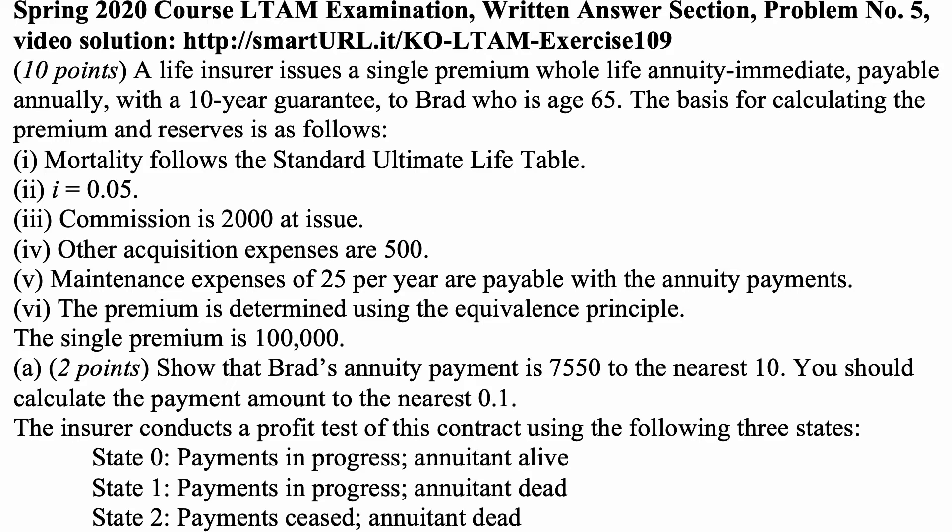The insurer conducts a profit test of this contract using the following three states. State 0: Payments in progress, annuitant alive. State 1: Payments in progress, annuitant dead. State 2: Payments ceased, annuitant dead.